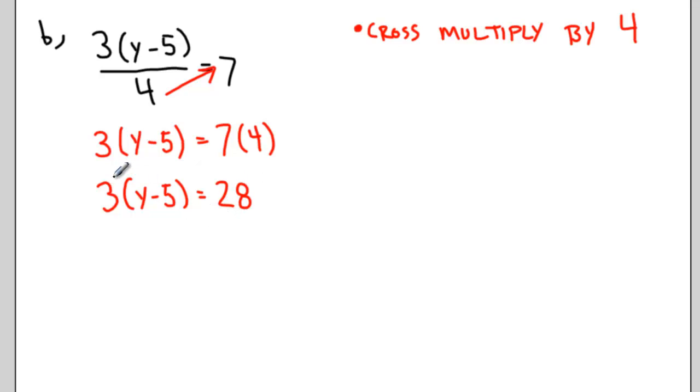I can then distribute the 3 into the brackets. So 3y take away 15 equals 28.